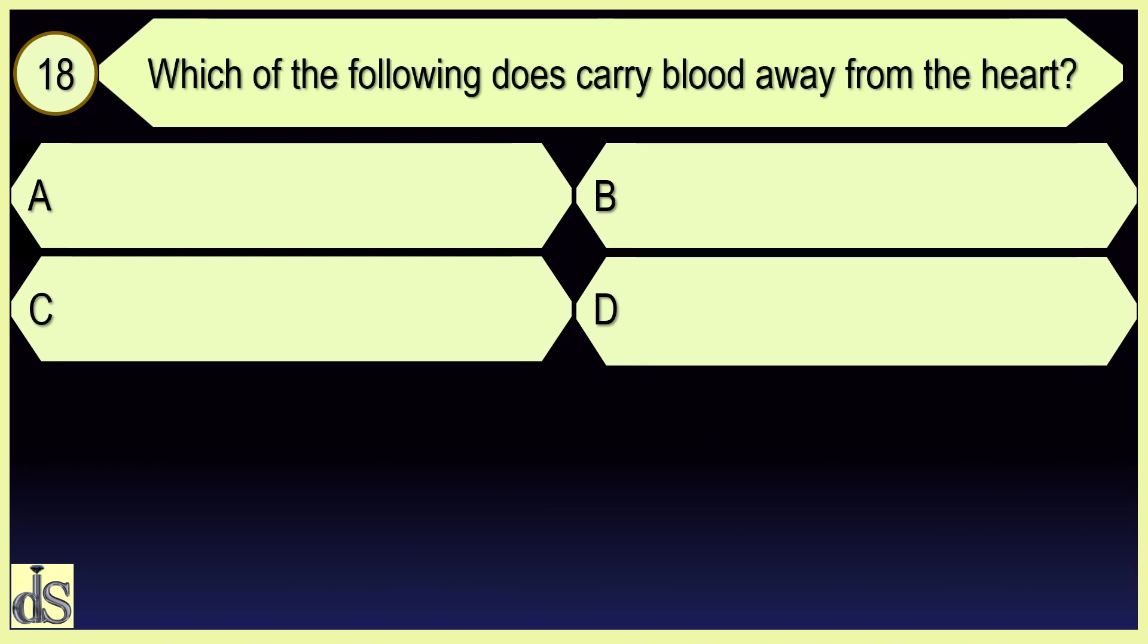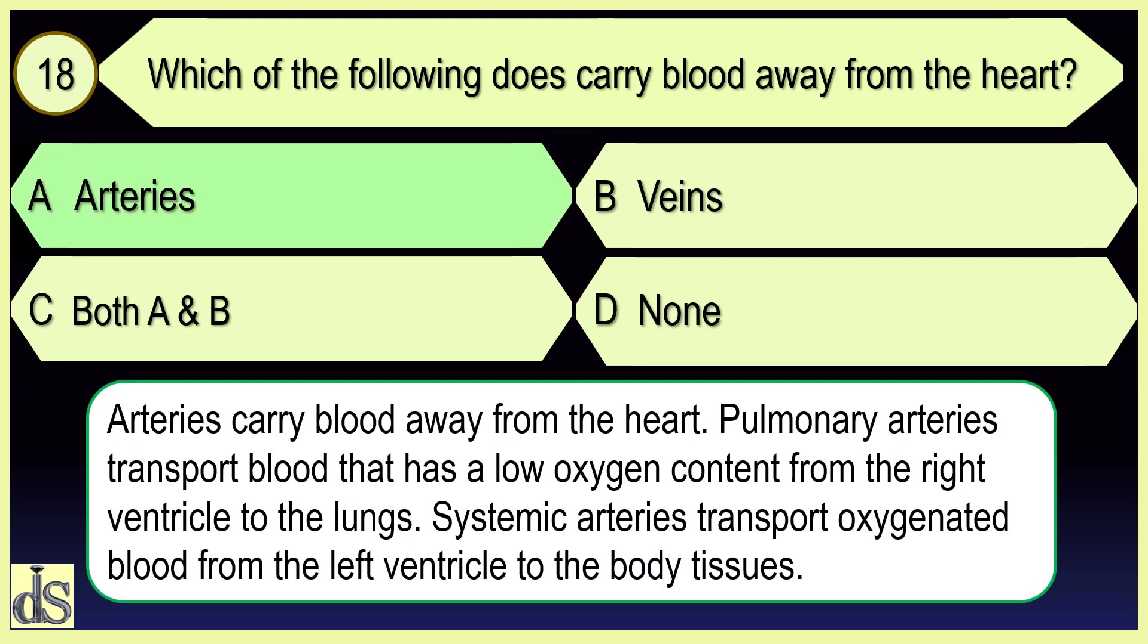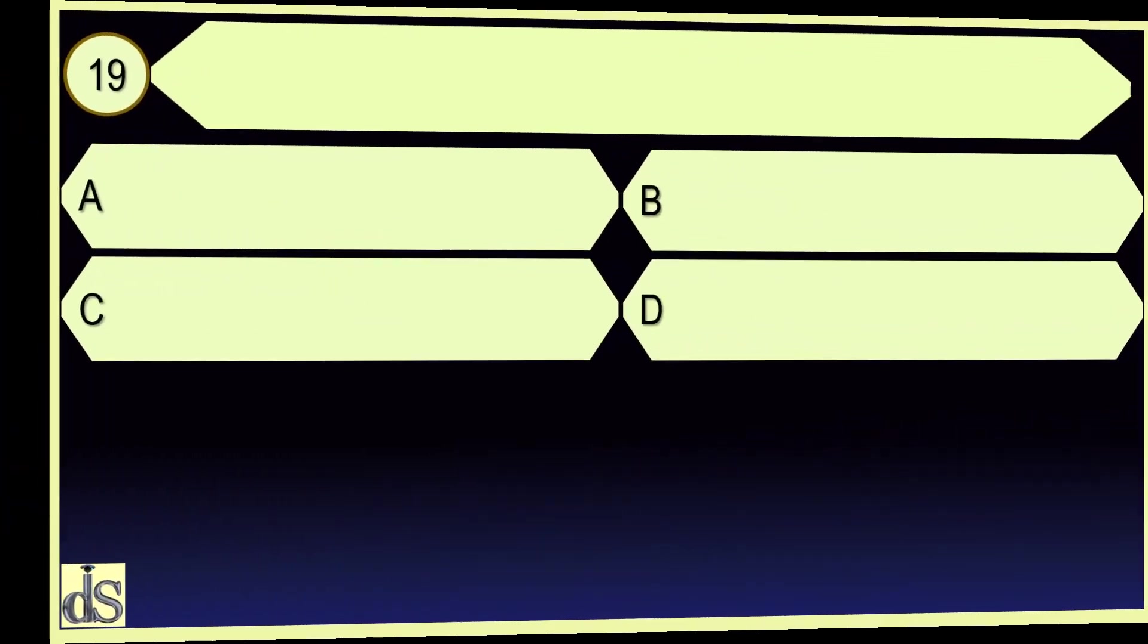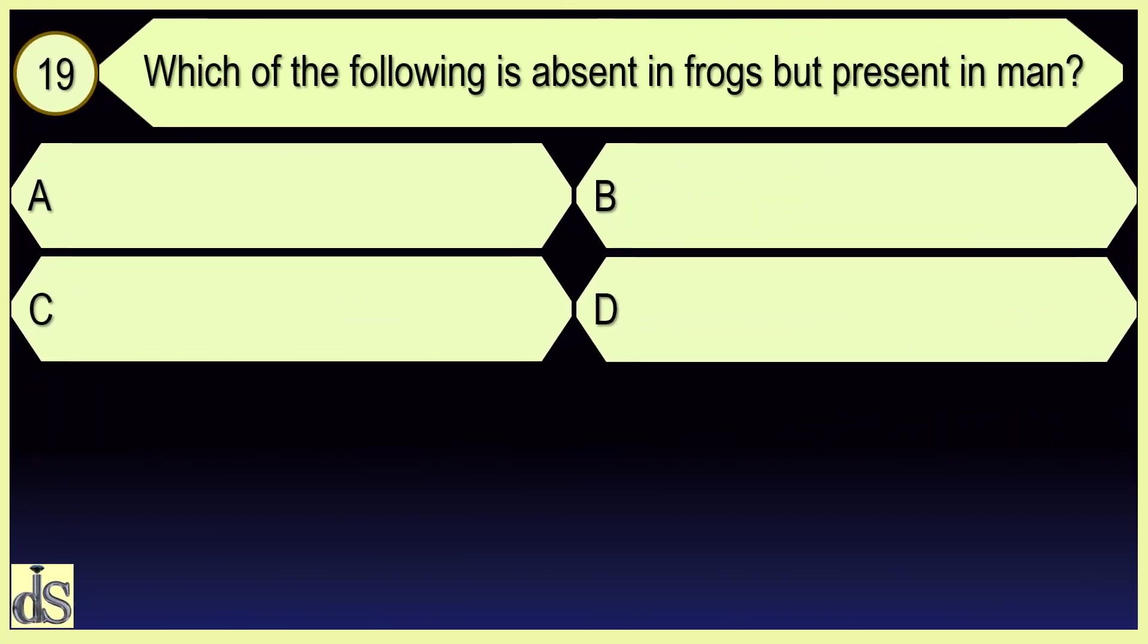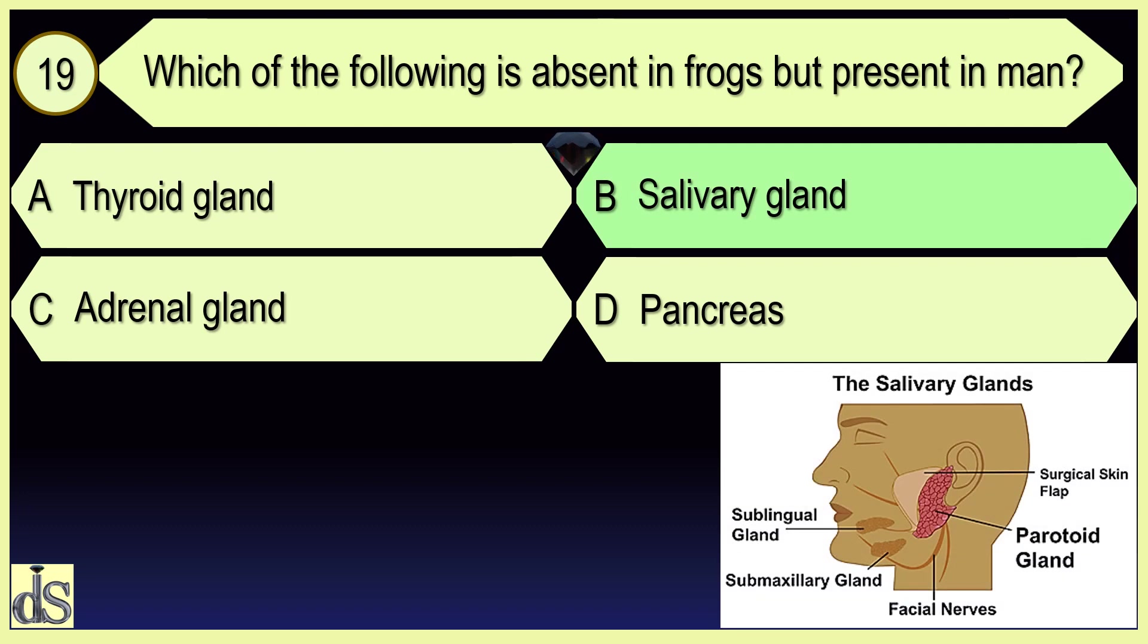Which of the following does carry blood away from the heart? Arteries. Which of the following is absent in frogs but present in man? Salivary gland.